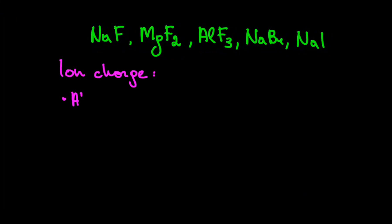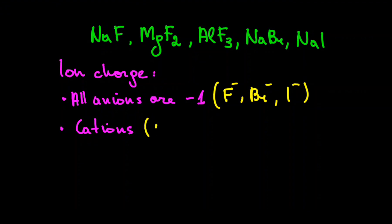First, we want to look at the ion charge. All anions have charge of minus 1. However, cations have different charges. Sodium has the smallest charge of plus 1, then magnesium with plus 2, and aluminum has the highest charge of plus 3.